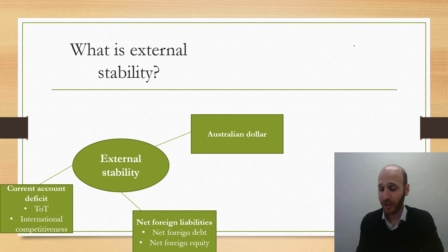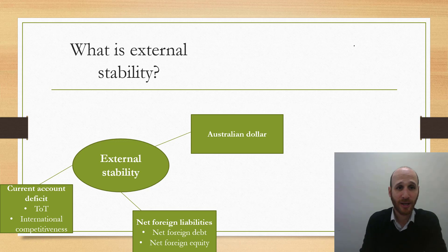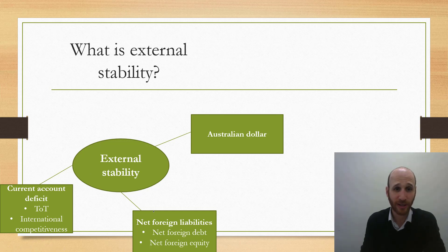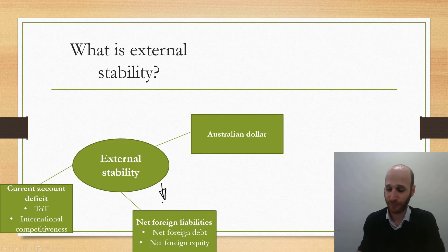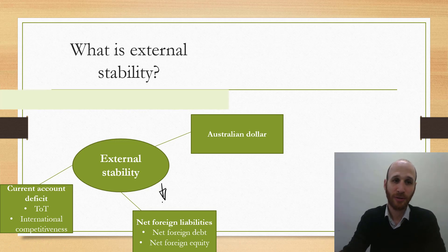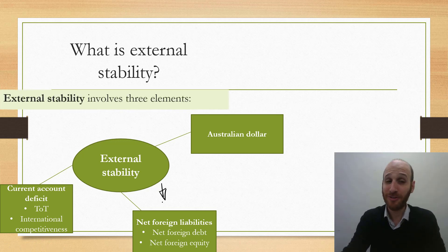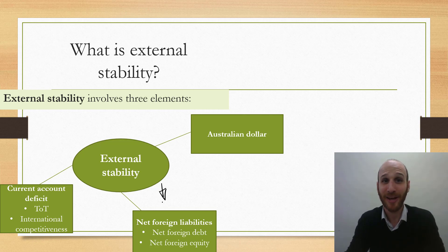To start with, let's quickly go back over the issue of external stability. In economics we look at external stability in terms of three things: the current account deficit, net foreign liabilities, and the Australian dollar. In this video, we're going to focus on net foreign liabilities.